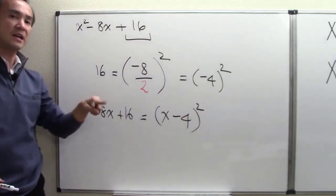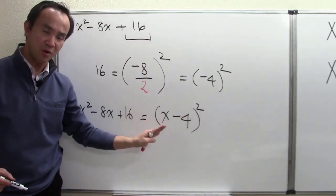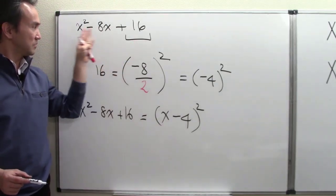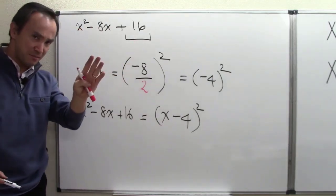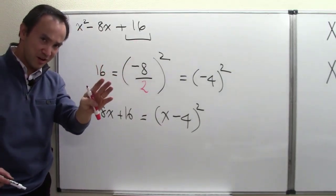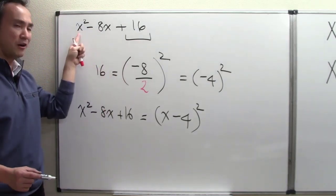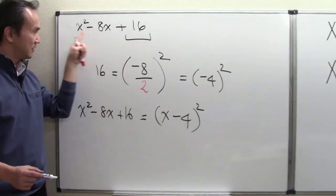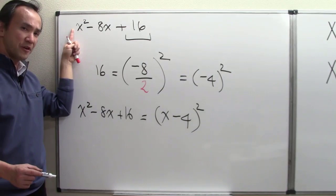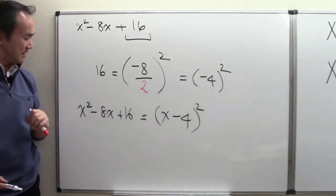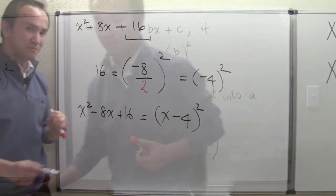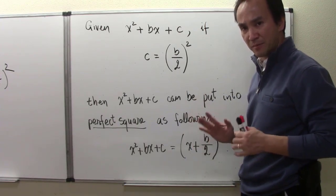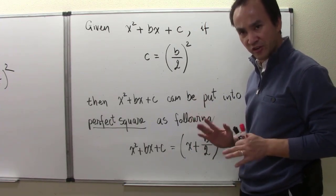Minus 8 over 2 is minus 4, so positive 16 is (−4) squared. After that observation, here's how I bring x squared minus 8x plus 16 into a perfect square quickly and instantly: in parentheses, the first term is just x, the last term is minus 8 over 2 which is minus 4, so we write (x − 4) squared. That is the new method I want anyone to learn from here, working only for a polynomial with one variable and leading coefficient 1.